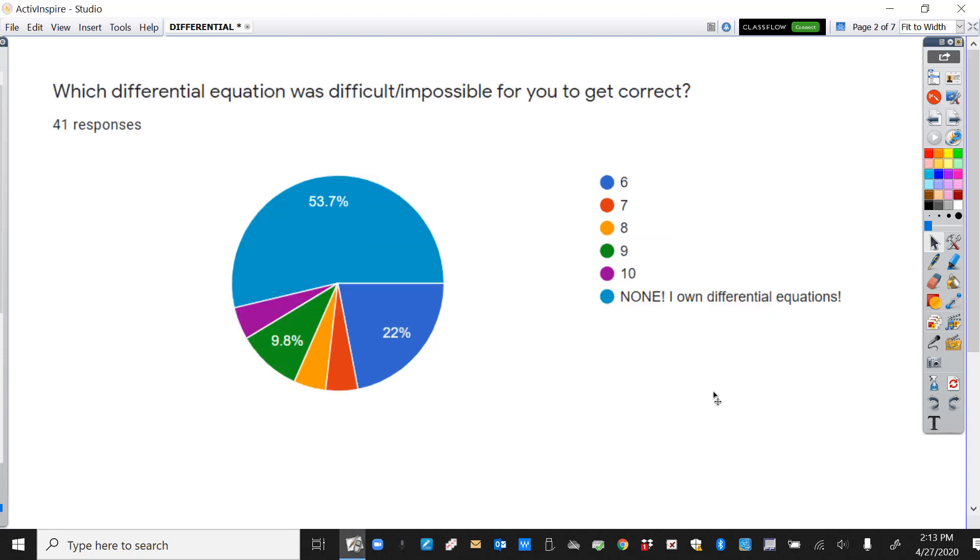Then I've got one more data thing. It says which differential equation was difficult or impossible for you to get correct, and most people said that they owned differential equations. We're going to do a circuit today with differential equations. I took the one that had the 22 percent and made one like it, and I made that the first equation in our circuit so we can do that one together and make sure that everybody's got that one perfectly well done.